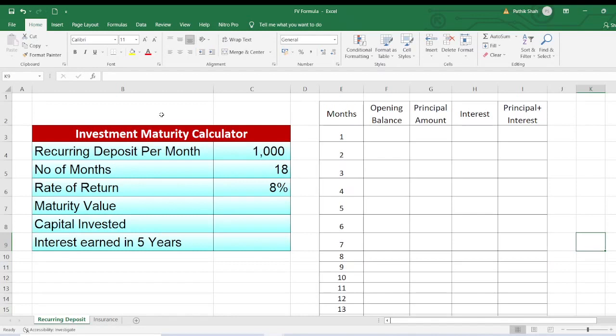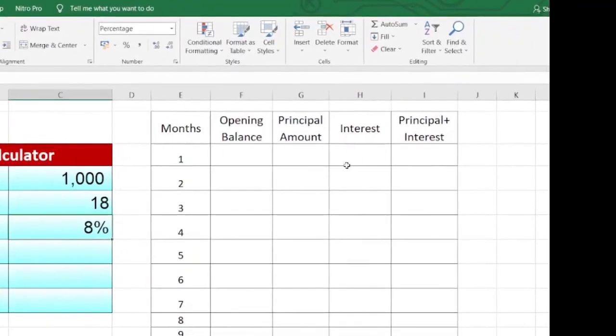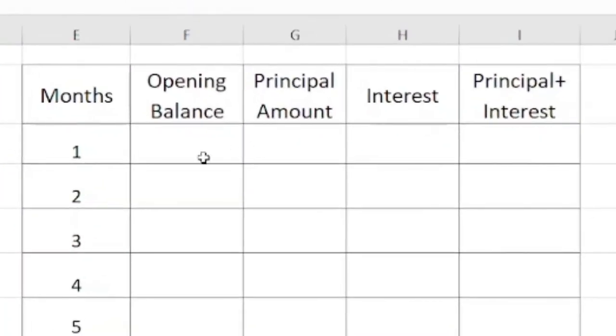Friends, let's take an example of an investment scheme. Here we are taking a recurring deposit in which you are investing 1000 per month, total number of months is 18, and the rate of return is 8% per annum. Now we will calculate how much interest you are getting each month. So to begin with, in this table we will prepare the details. In the first month, my opening balance will be 0.